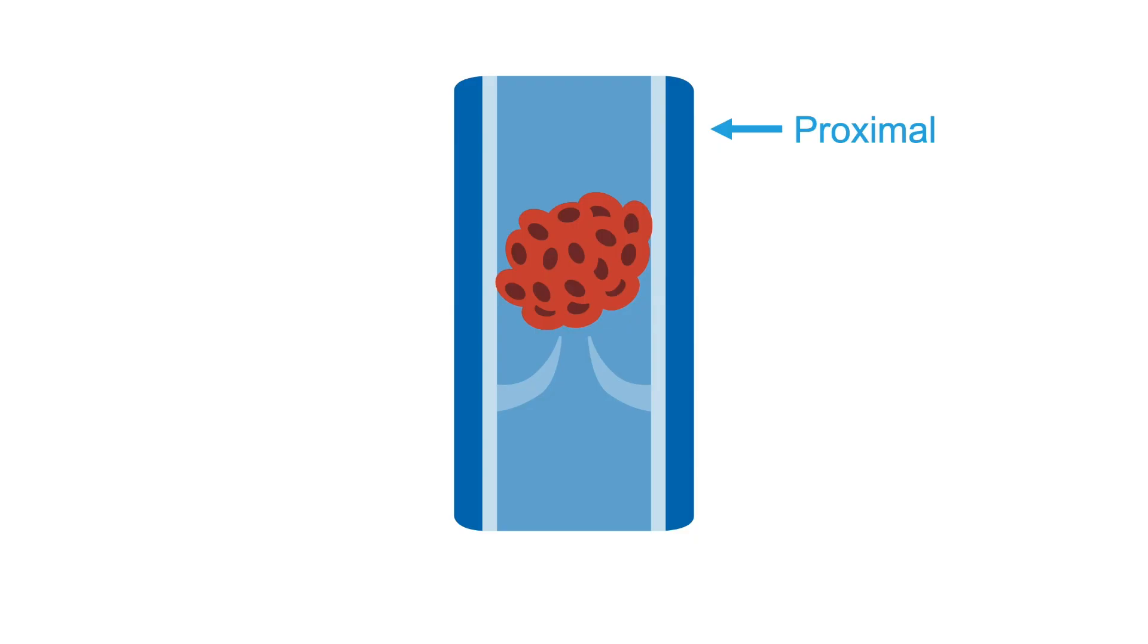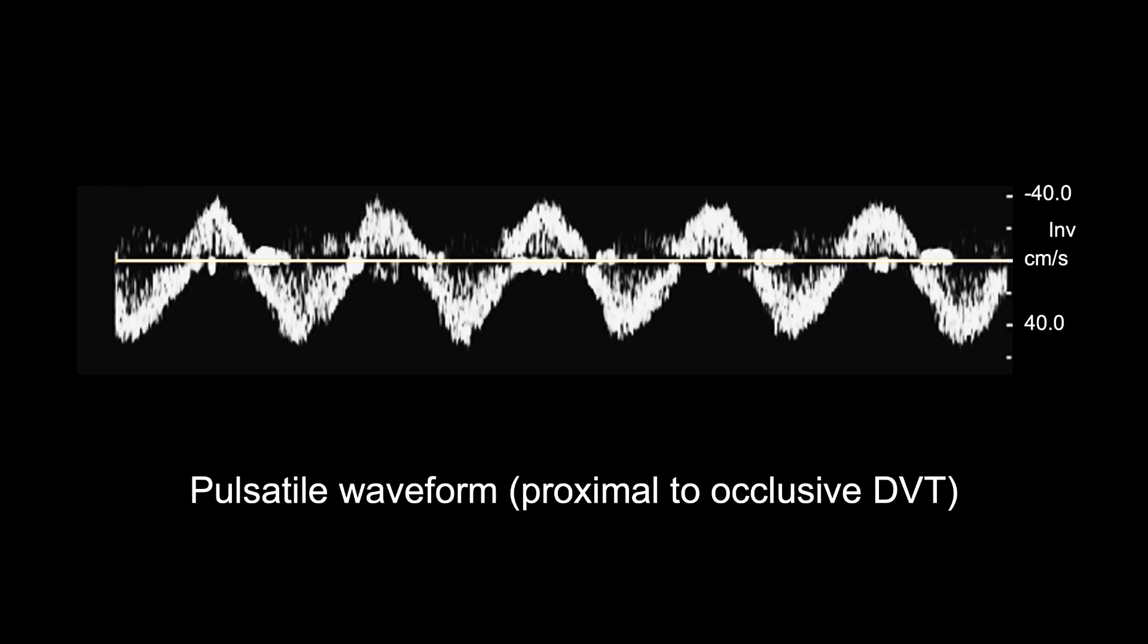Waveforms proximal to an occlusive deep vein thrombosis are sometimes pulsatile, depending on the amount of phasic superficial venous flow that counteracts the pulsatile area, as well as the patient's cardiac history.